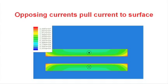In transformers, it's a little different. Here we have two conductors, one with current flow out of the foil, and one with current flow into the foil. And what you'll see is that these opposing currents tend to pull the currents to the surfaces.